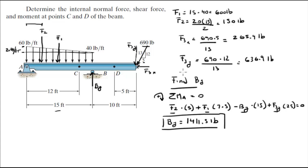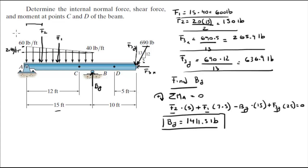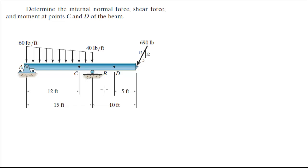Now we have all the values needed: F3Y, F3X, F2, F1, and BY. We'll use the method of sections at C, cutting right there and analyzing the right side. We go to the right because we have all the forces figured out there; going left would involve point A's pin, which has both vertical and horizontal reactions and gets more complicated.